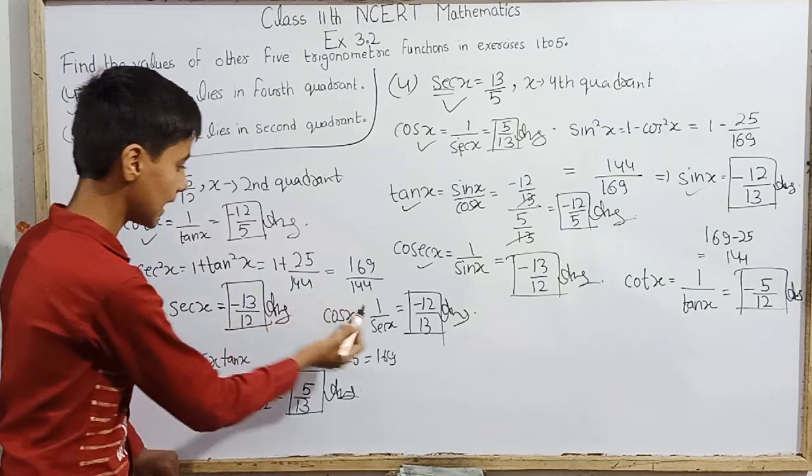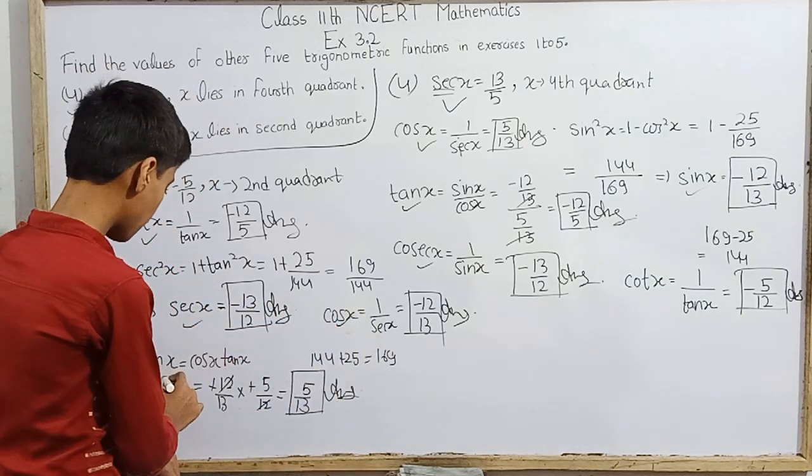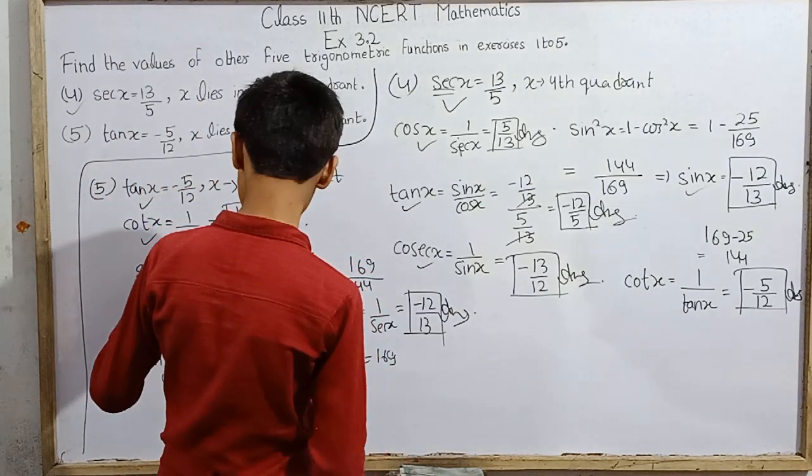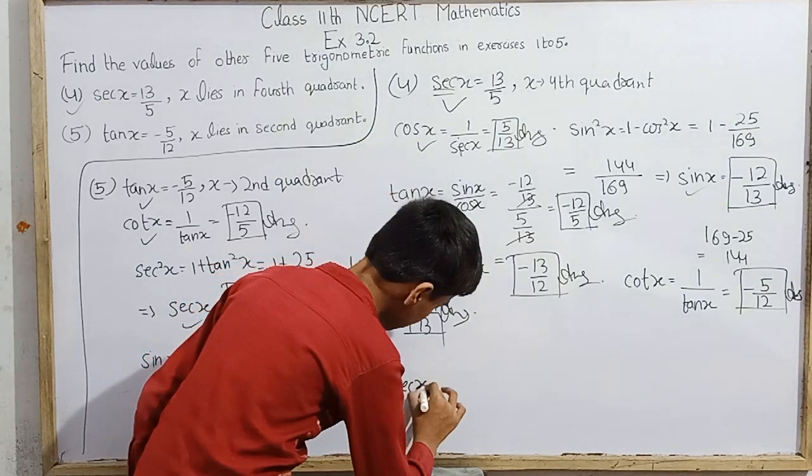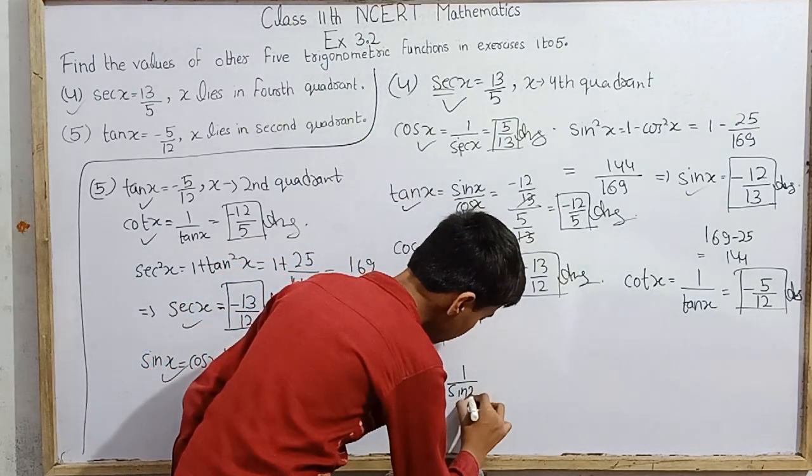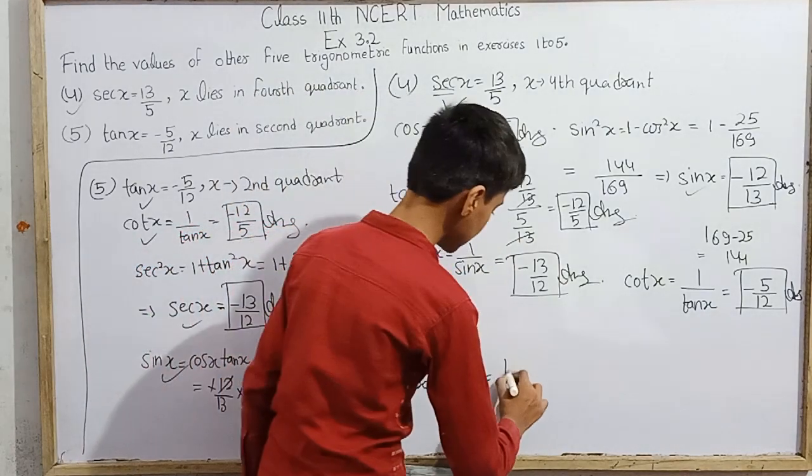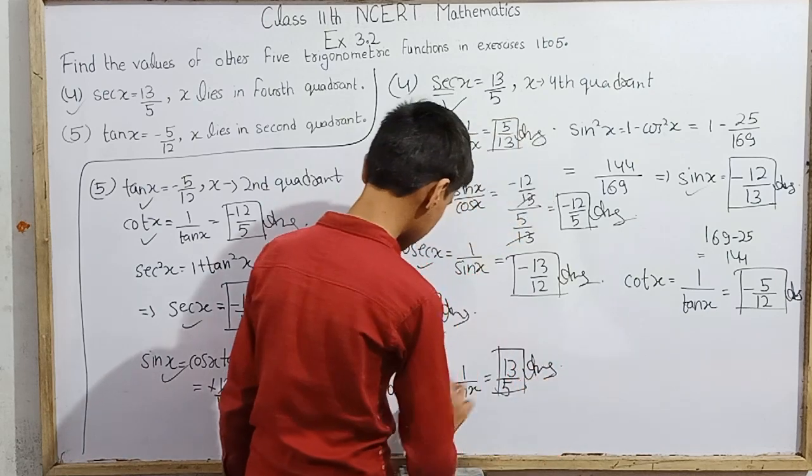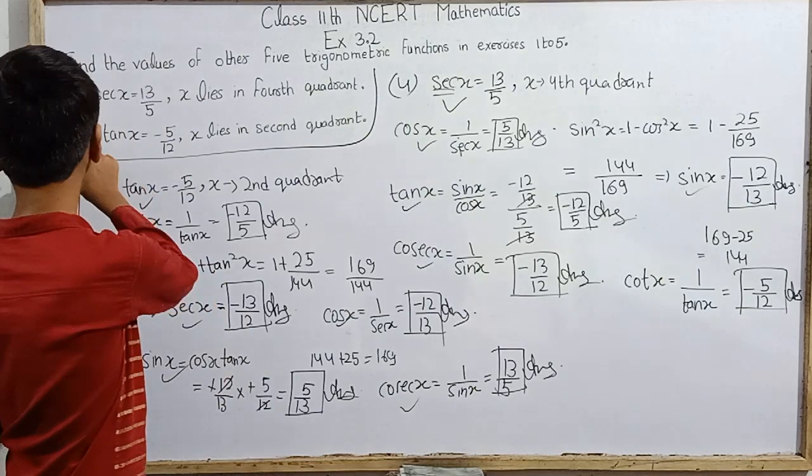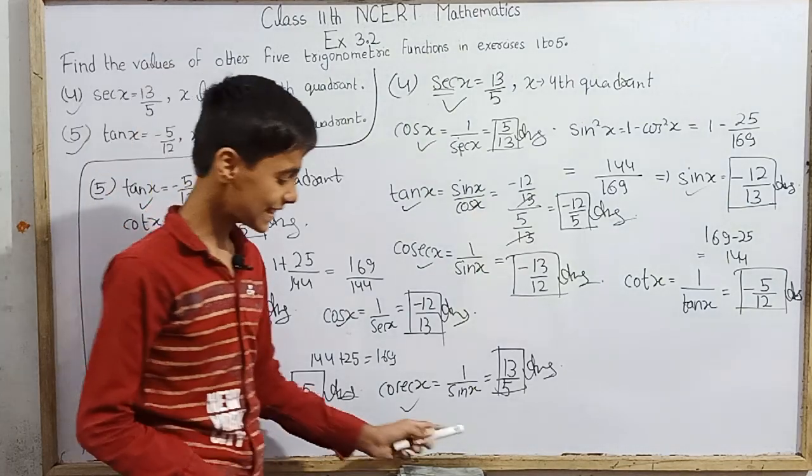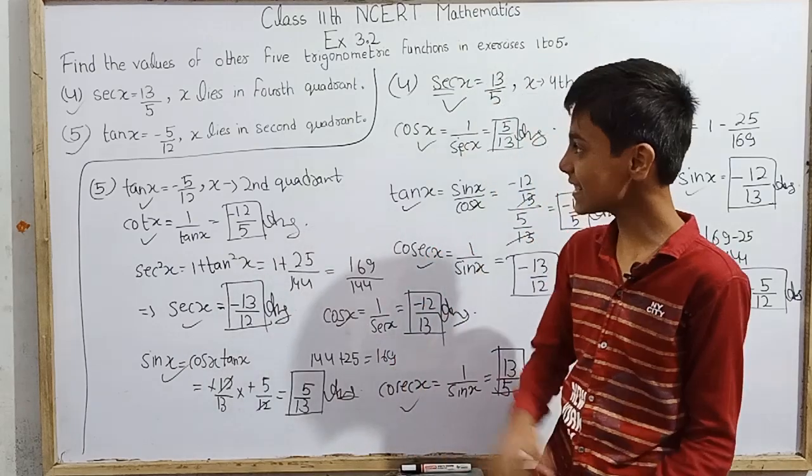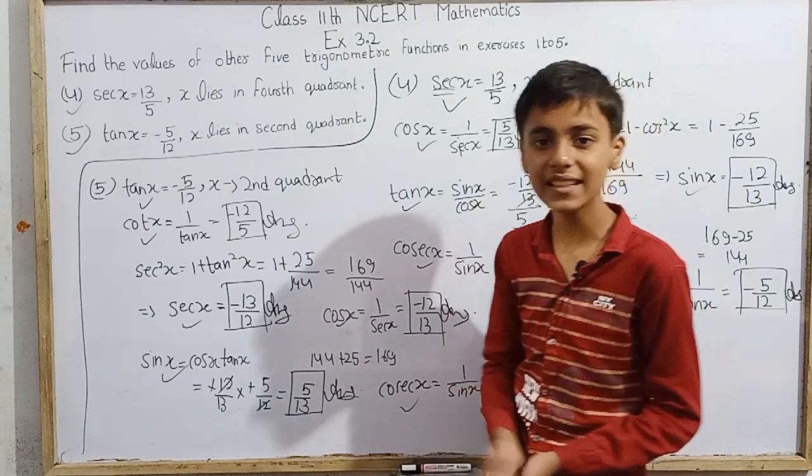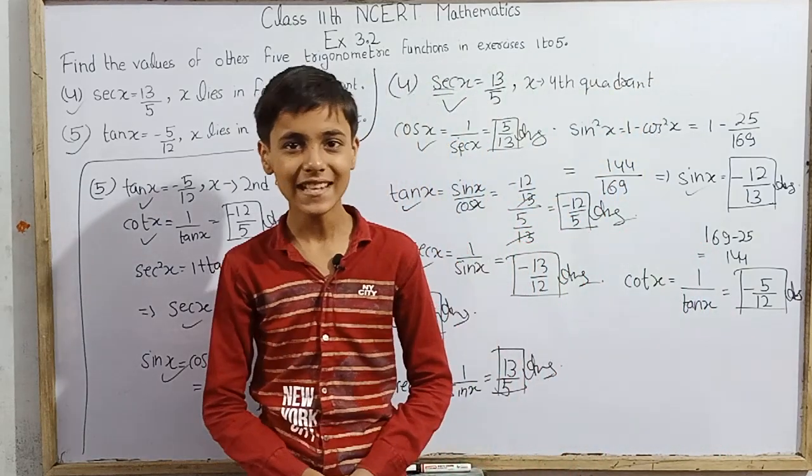How many ratios do we have? Let me count: 1, 2, 3, 4, 5. Five ratios. But I think there's also cosec x, right? Cosec x is 1 over sin x, which equals 13 over 5. So we have all 6 trigonometric function ratios. That means we have completely solved the problem. Since 5 were asked, but there are 6 trigonometric ratios in total.